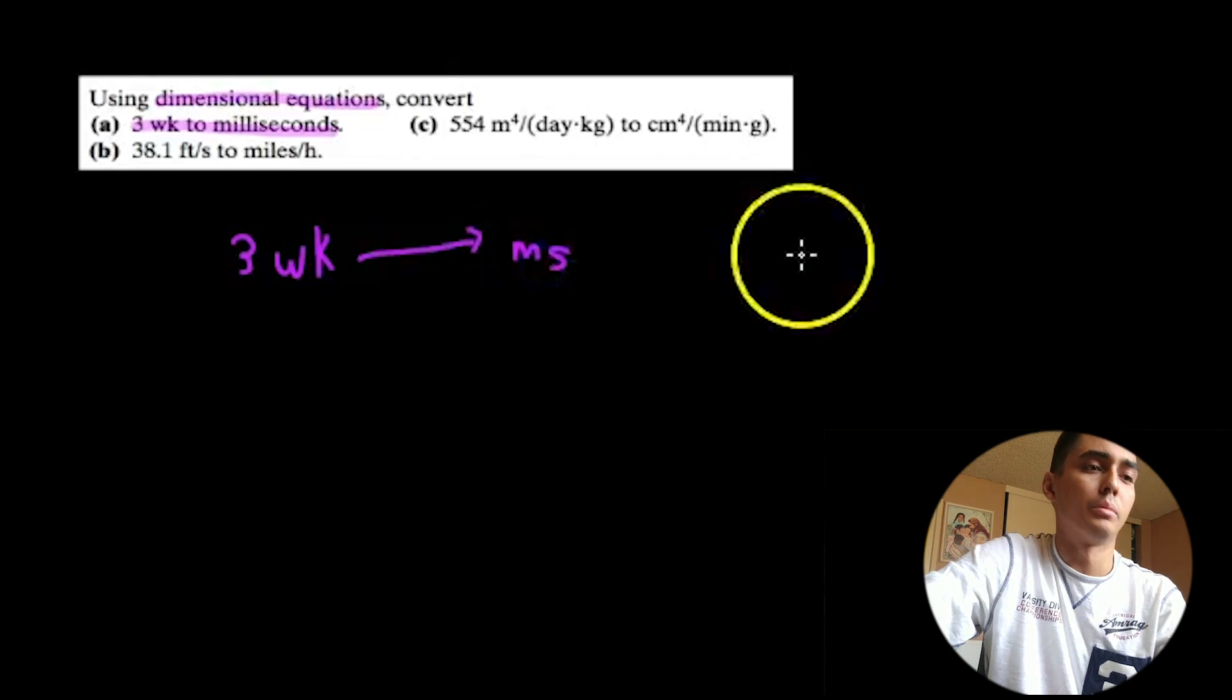And let's see how we go. So the first thing we're going to do is let's just write down the problem. We write down the problem. We want to convert three weeks into milliseconds.